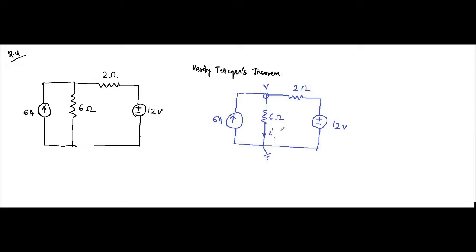Let this be I1 and this be I2, with arrowheads representing their directions. Applying KCL at node V: 6 ampere and I2 are approaching the node, while I1 is flowing away from the node. So the KCL equation is: I1 = I2 + 6.